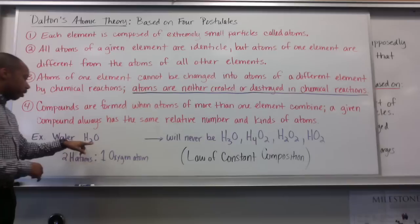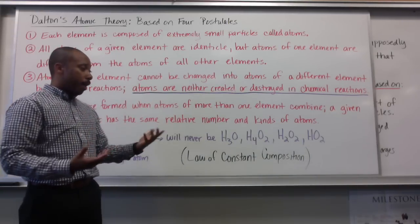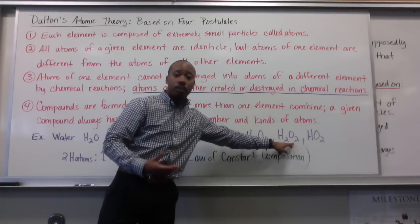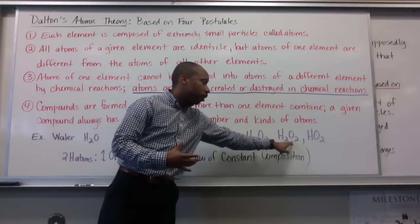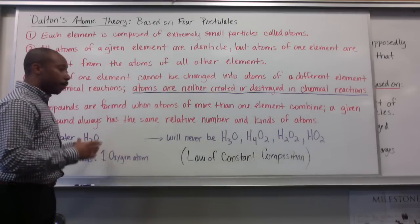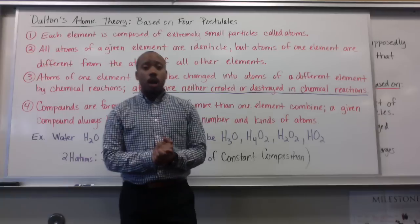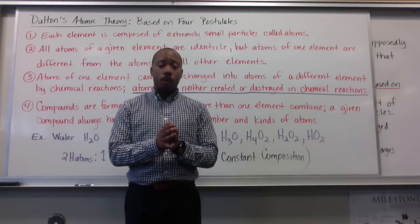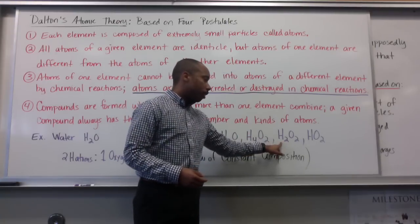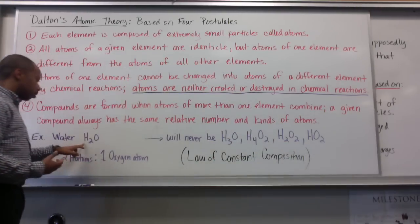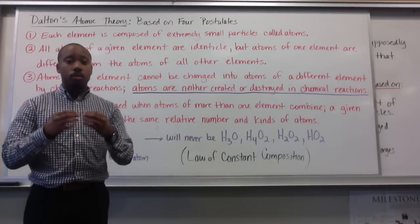The law of multiple proportions essentially states that when two elements can come together and make multiple compounds, for example H2O2, which is hydrogen peroxide — the stuff you put on your cuts when you get a scrape — this is also made of hydrogen and oxygen, just like water, but they have different ratios and different proportions. The law of multiple proportions says that each compound will have its own set of unique whole number ratios: two hydrogens to two oxygens, or two hydrogens to one oxygen — their own unique set of small whole number ratios.